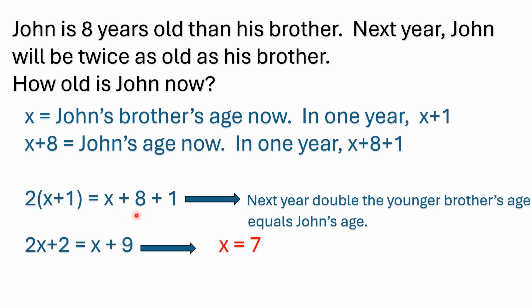So if we were to double the younger brother's age one year from now, that would equal John's age. That gives us an equation. We know that in one year, John's younger brother will be x plus one years old. So if we double that, that's taking two times the quantity x plus one. And we set that equal to John's age one year from now, which we've already said was x plus eight plus one — that's x plus nine.